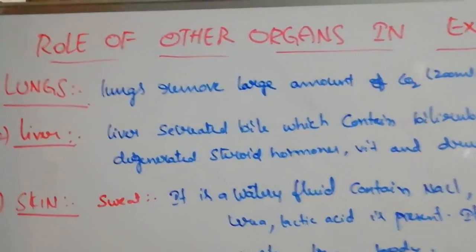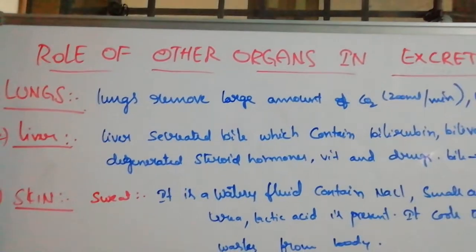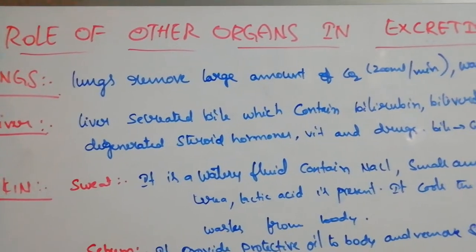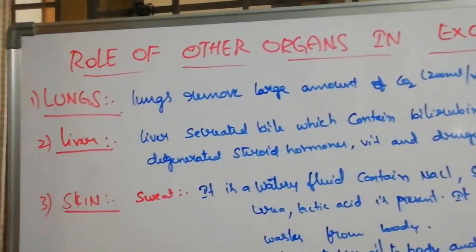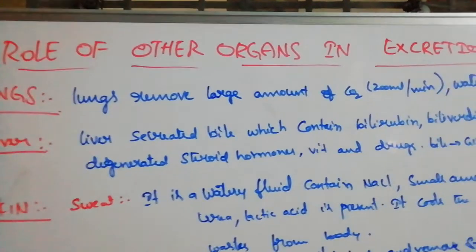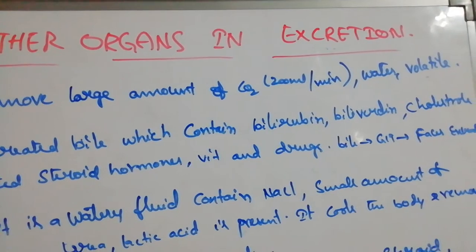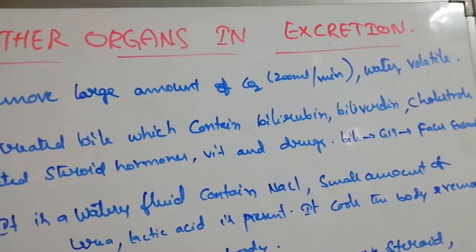Next one is role of other organs in excretion. First we see the lungs. So lungs are removing large amount of carbon dioxide. While we are exhaling it is removing large amount of carbon dioxide like 2200 ml per minute.